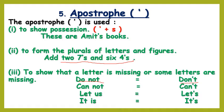Similarly: 'cannot' can be written as 'can't' — C-A-N apostrophe T. 'Let us' becomes 'let's.' 'It is' becomes 'it's.'